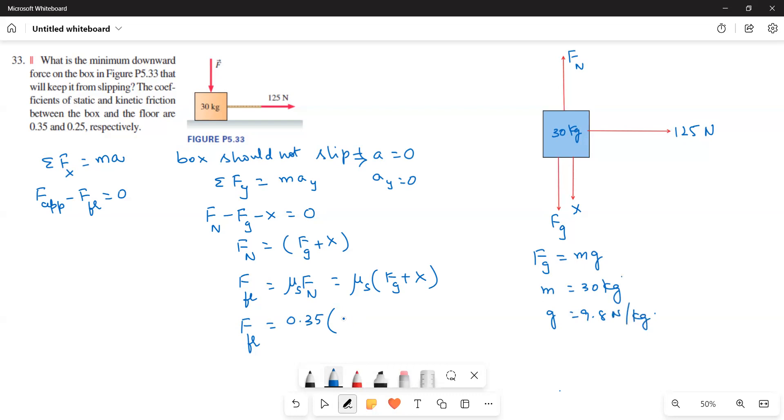So if that is the case, then MG is equal to 30 into 9.8 is equal to 294 Newtons. That I will directly substitute here instead of FG. So 294 plus X.